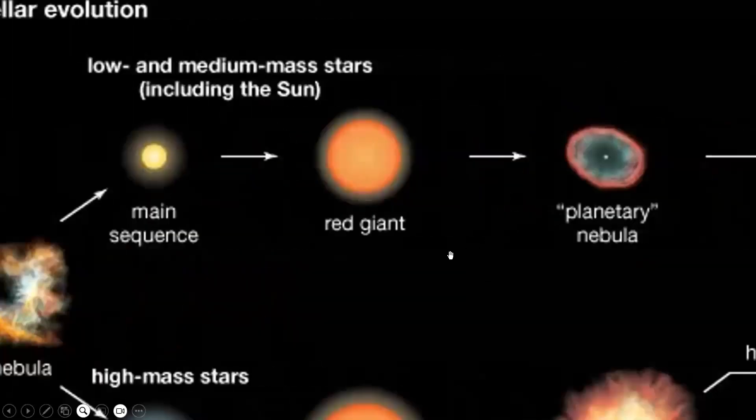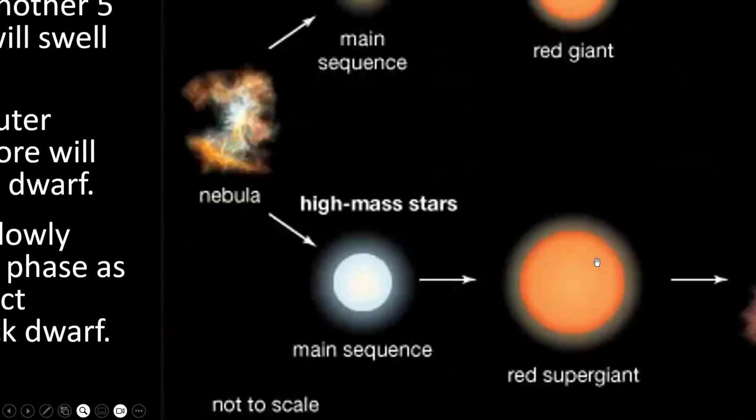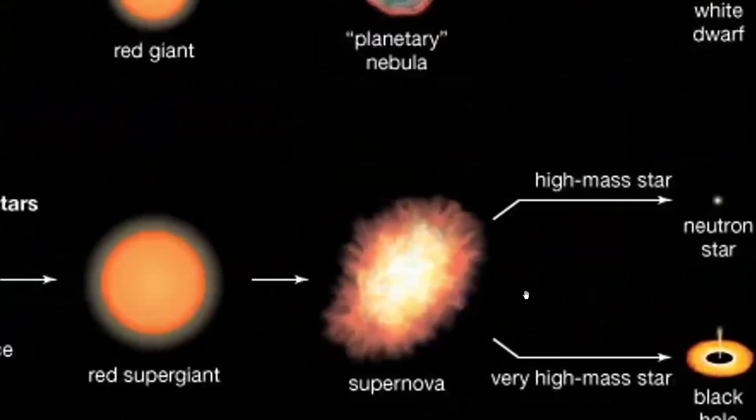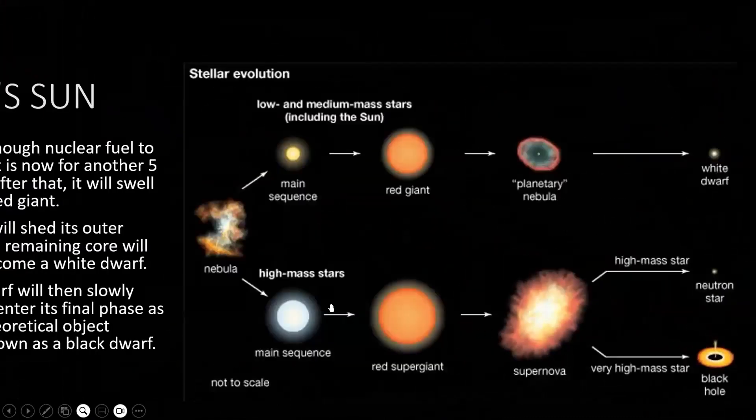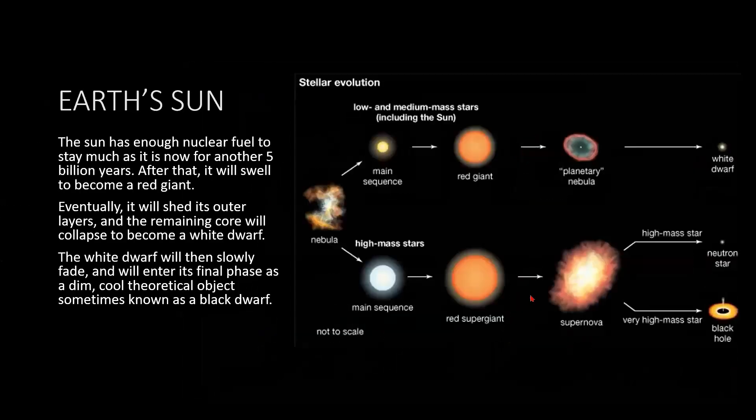You've got the Sun, you've got the red giant, you've got the planetary nebula, and you've got the white dwarf. High mass stars become red supergiants, then a supernova, and very high mass stars become a neutron star, and very high mass stars also can become a black hole. This is our Sun's journey, or Sun's life path, and this is for the very super high mass stars.